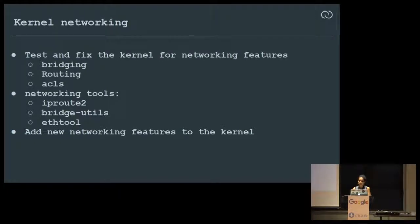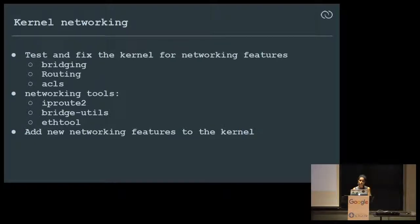Kernel networking: we exercise a lot of kernel network features — bridging, routing to a great extent, ACLs, and networking tools like iproute2, bridge utils, ethtool. We end up backporting a lot of patches. We started from Debian and for some packages moved to latest upstream versions; for others we kept the Debian version but backport patches from upstream, working closely with the Linux kernel community.